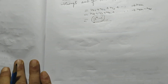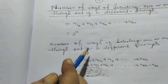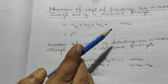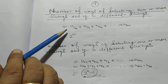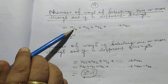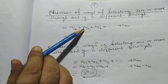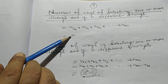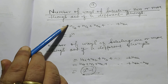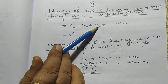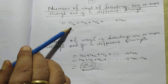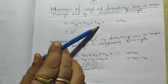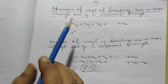Now I want to discuss a general rule: the number of ways of selecting 0 or more things out of n different things. The total number of selections = nC0 + nC1 + nC2 + … + nCn = 2^n. From the binomial theorem, we know nC0 + nC1 + nC2 + … + nCn = 2^n.